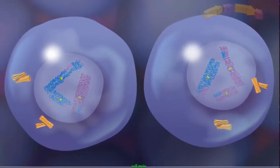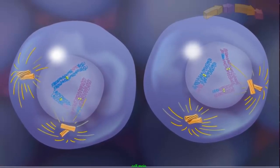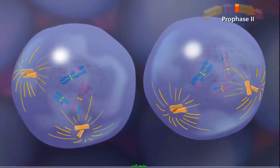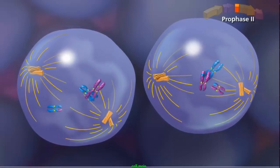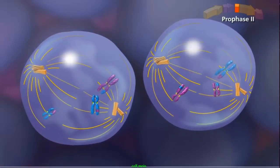Centrioles again duplicate and begin moving to opposite poles of each cell. In prophase II, the sister chromatids condense while the spindle starts to form as the nuclear envelope disappears.